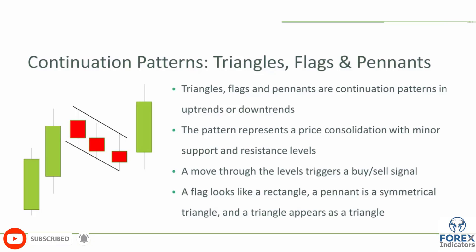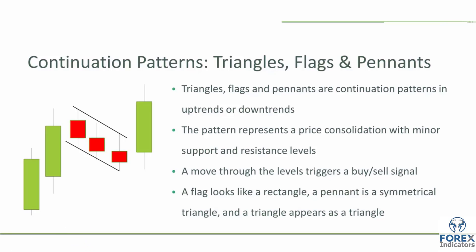What we're looking for is the stock to pull back in a bull trend, and when the stock breaks the upper portion of the resistance within the triangle, flag, or pennant, that break can be taken as a buy signal. The same is true in a bear trend — when the stock is trending down and pulls up to form a triangle, flag, or pennant, and then breaks the lower bound of support, that is taken as a signal to enter the stock on the short side.